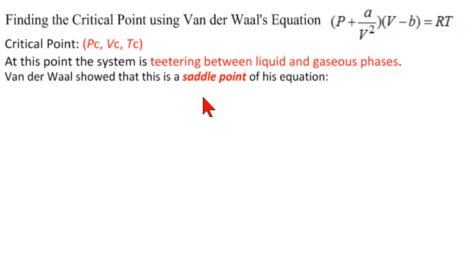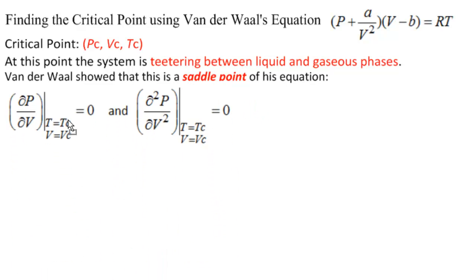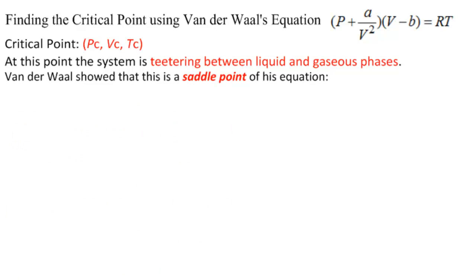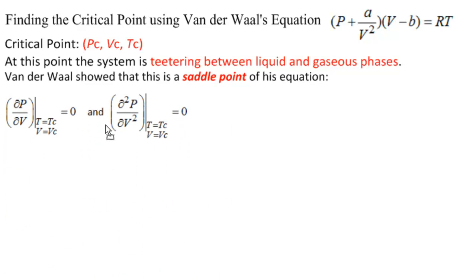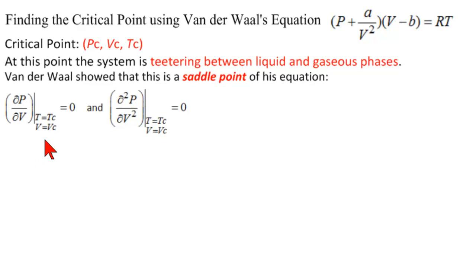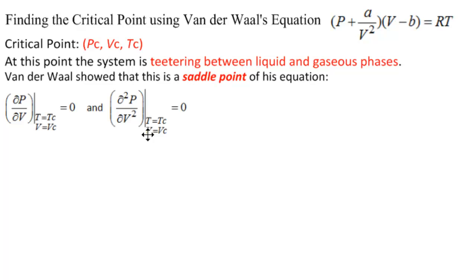Van der Waal showed that this is the saddle point of his equation, so that means it satisfies these two equations. The first partial of pressure with respect to volume, evaluated at the point TC and VC, must be zero. And the second partial derivative of P with respect to V, evaluated at the same point, must also be zero. So let's see if we can work this out mathematically and find the point like Van der Waal did.